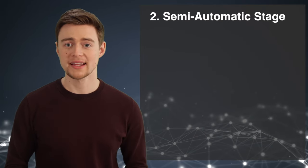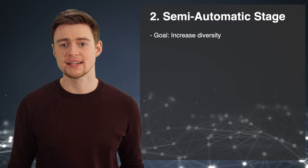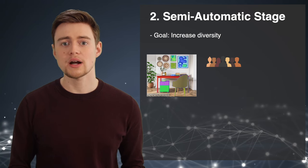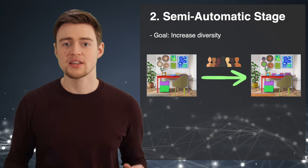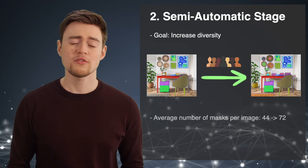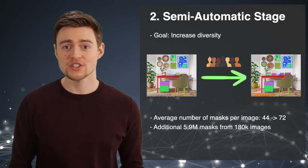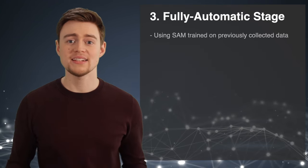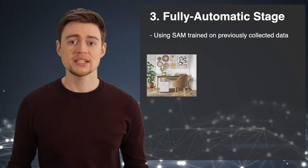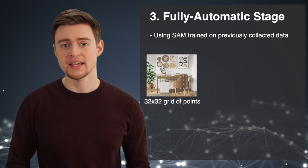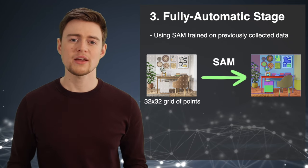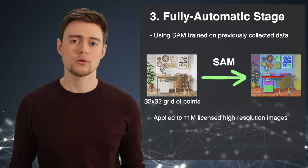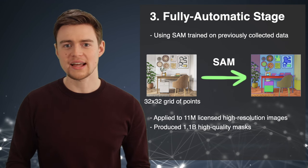The second stage was called semi-automatic, and the goal was to increase the diversity of the dataset. It also involved human annotators, but this time they were presented with already annotated images and asked to label anything else they could find. After this stage, the average number of masks per image went from 44 to 72 masks, and the data engine collected an additional 5.9 million masks. The last stage was called fully automatic and didn't involve human annotators. They prompted SAM with a 32 by 32 grid of points, predicting a set of masks for each point, and applied this to 11 million high-resolution images, resulting in 1.1 billion high-resolution masks.